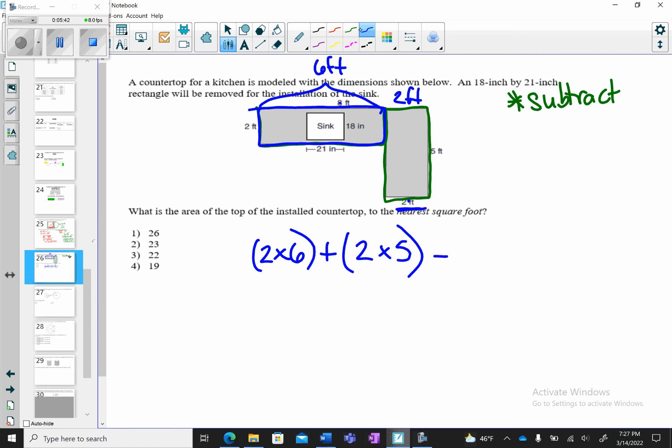So everything is in terms of feet except for the sink. So we have to put that in terms of feet. We know that there is 12 inches in a foot. So we're going to take this 21 inches and divide that by 12, and we're going to get 1.75. We're going to do the same to the 18, so 18 divided by 12, and that's going to give us 1.5. So we're going to find the area of that, which is a rectangle. So we're going to multiply 1.5 times 1.75.